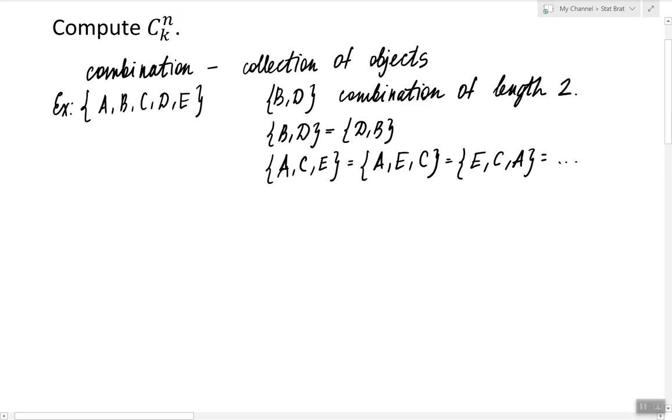So we are interested in finding the number of possible combinations of length k out of n objects and we use the following notation to label such number.